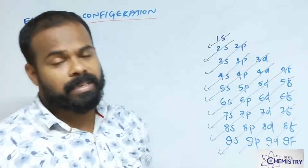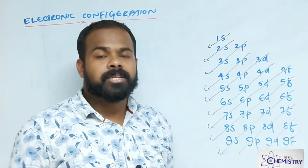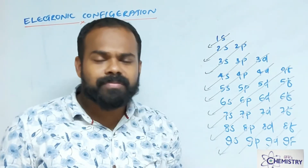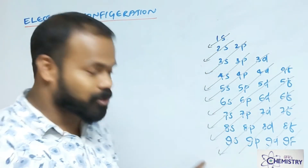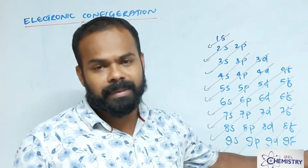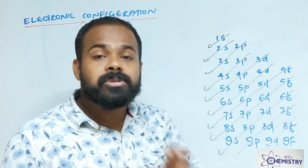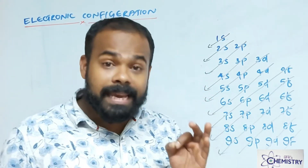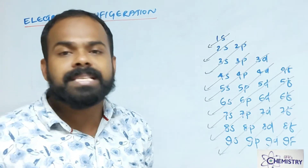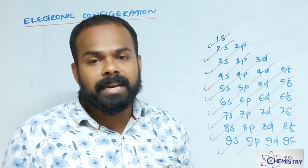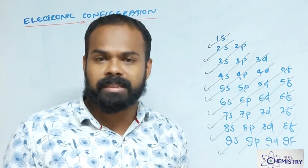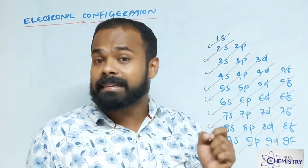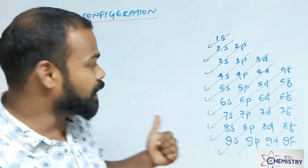Hi, welcome to GFS Chemistry channel. Today we are going with electronic configuration. We know it is a symbol. I am going to explain how to detect — by getting a number of electrons, by getting the atomic number — how we can check group, period, block, valency, ionization enthalpy, etc. Very important for your entrance and regular studies.